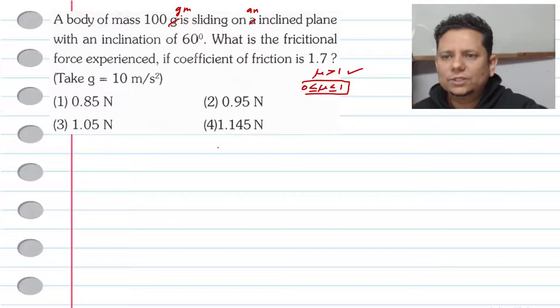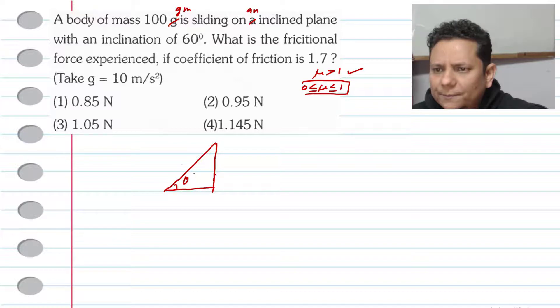So our scenario is this is your inclined plane, which angle is 60 degrees. This is your inclined plane and one mass is here. This mass will slide with velocity and acceleration.